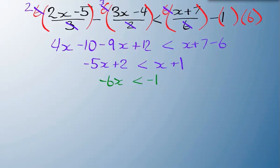x I have to get all by itself. Now I am going to be dividing by a negative number. Dividing both sides by negative 6. Flip that inequality symbol. x is greater than 1 sixth.